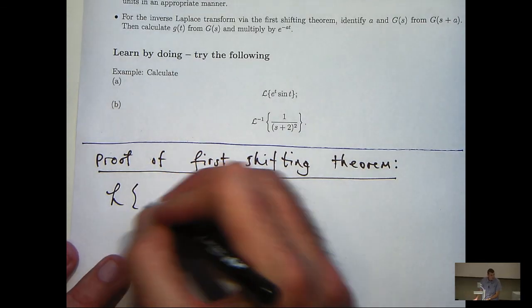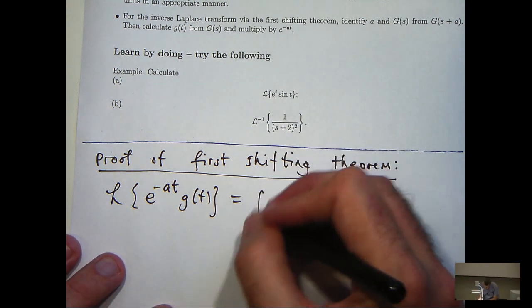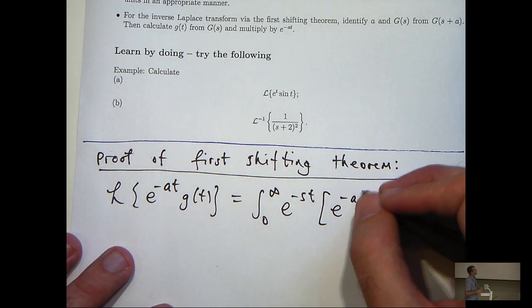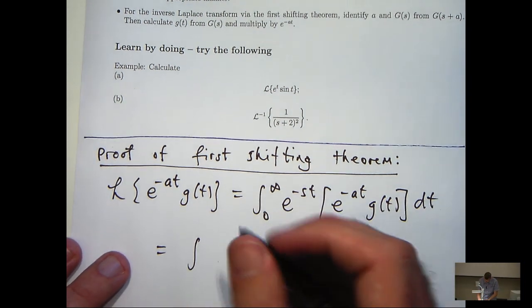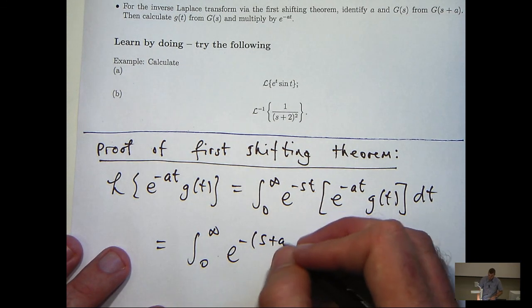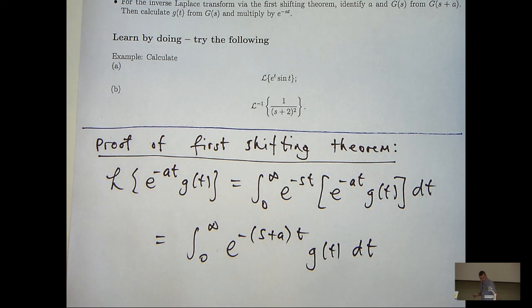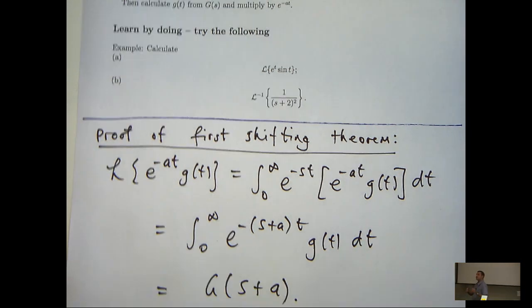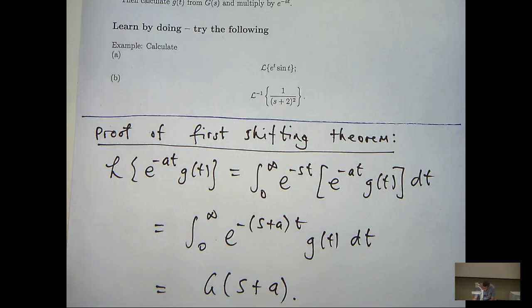Let's quickly show the proof of the first shifting theorem. Working from first principles of the Laplace transform: if I'm taking the Laplace transform of this function, I multiply by the exponential kernel and integrate over the half line with respect to t. I can then combine the exponentials together, which gives s plus a in brackets — and that is just g of s plus a by definition. So the proof of the first shifting theorem isn't difficult. Have a go at the examples; in the next video we'll look at the second shifting theorem.